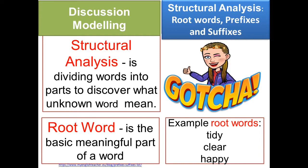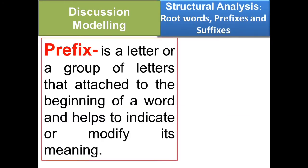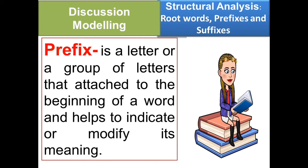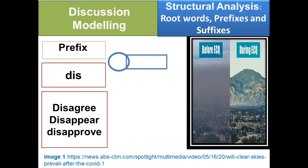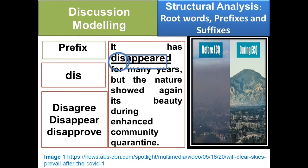Let's have prefix now. What is a prefix? A prefix is a letter or a group of letters that attach to the beginning of a word and help to indicate or modify its meaning. Let's read the example prefixes, words, meanings, and sentences. Prefix: Let's have the first prefix, 'dis.' Example words with prefix dis: disagree, disappear, disapprove. Example sentence: It has disappeared for many years, but nature showed again its beauty during enhanced community quarantine. As you can see, the underlined word is disappeared. The word disappear is the opposite of appear. The prefix of disappear is 'dis,' and the root word is 'appear.' It means that the word disappear becomes impossible to find.